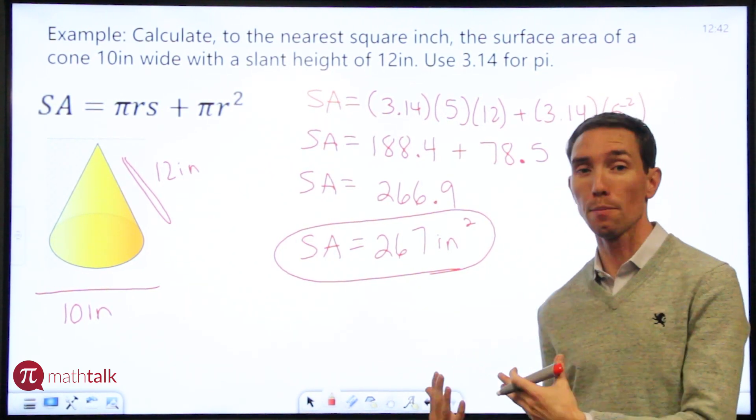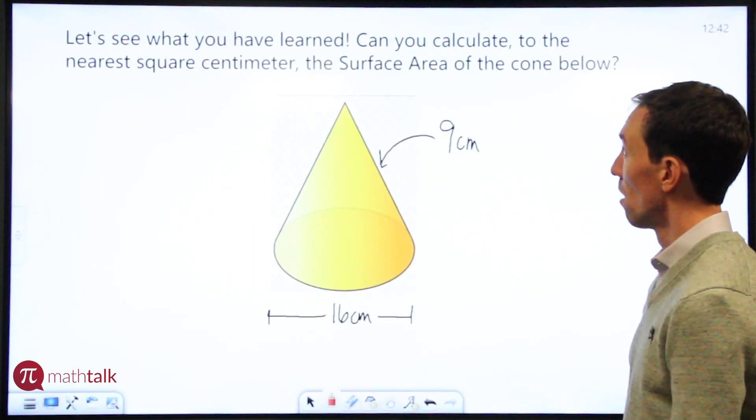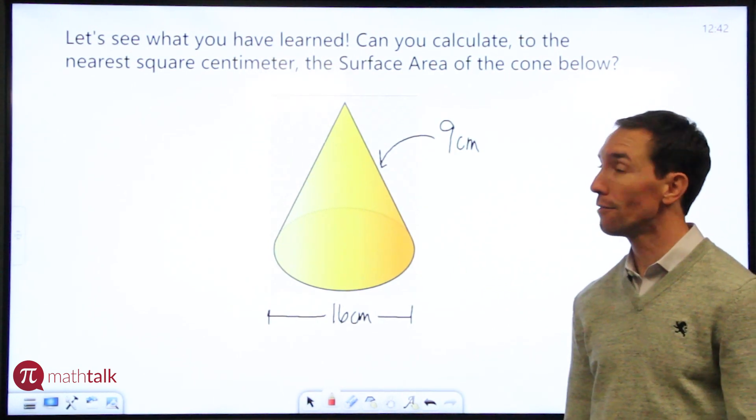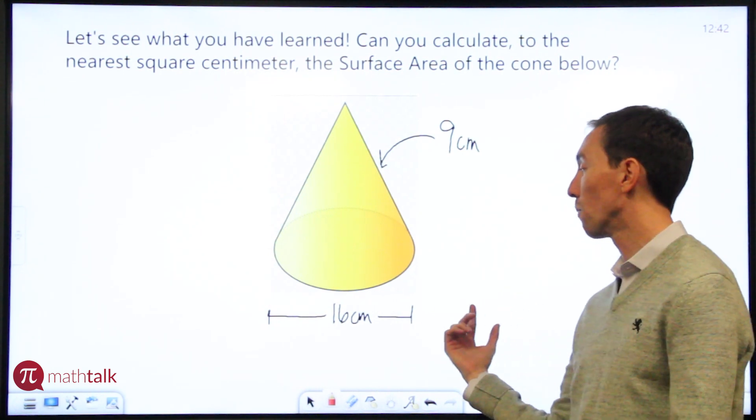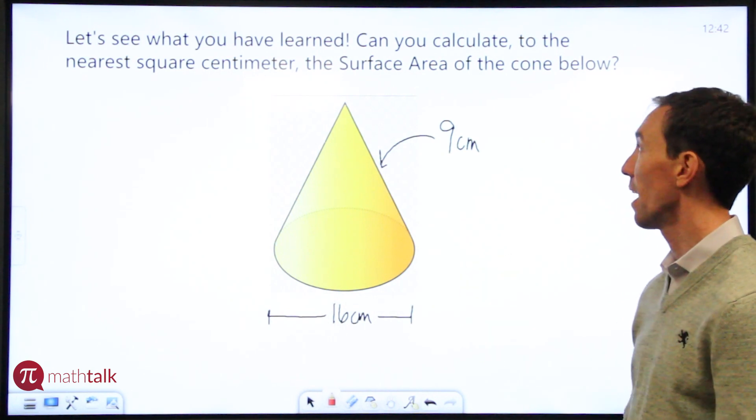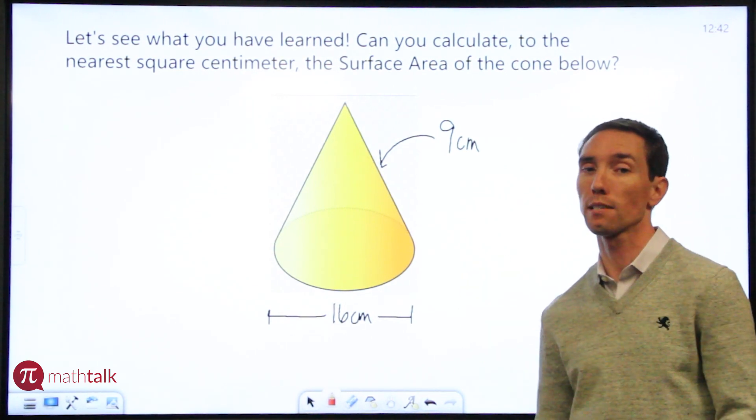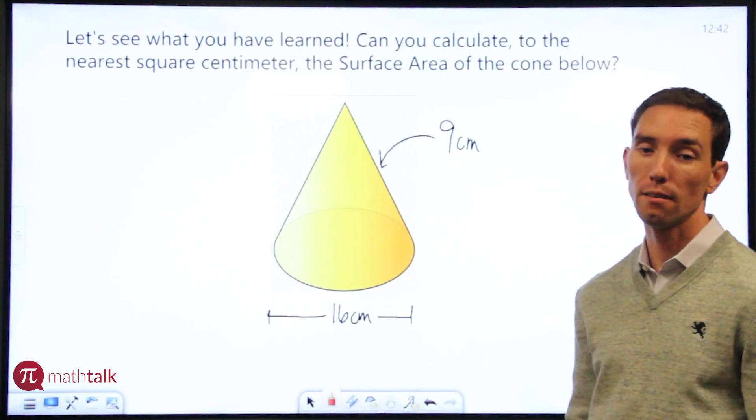Let's take a moment, I'm going to give you an example of your own to try at home, and see if you can calculate the surface area. So I have a cone here, I've given you some dimensions. I want to see if you can calculate the surface area of this cone. I tell you that the cone is 16 centimeters wide across the diameter, and I give you a slant height of 9 centimeters. So let's see if you can calculate to the nearest square centimeter what the surface area of this cone is. Let us know what you get.